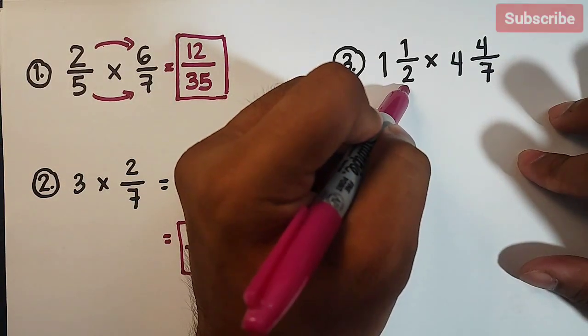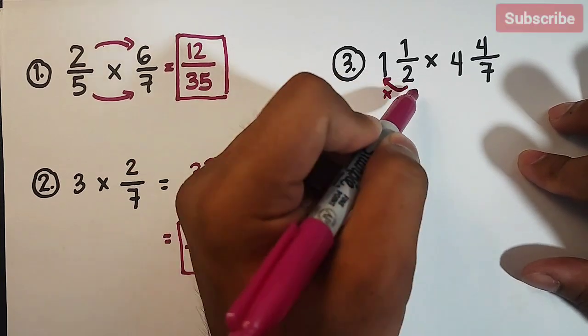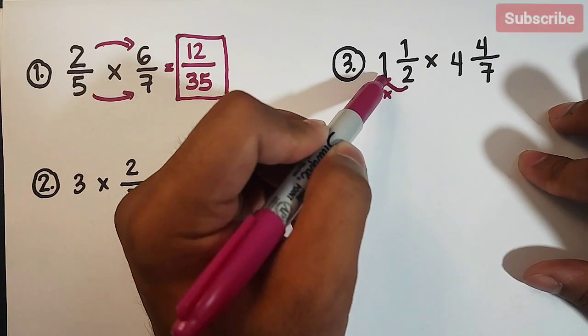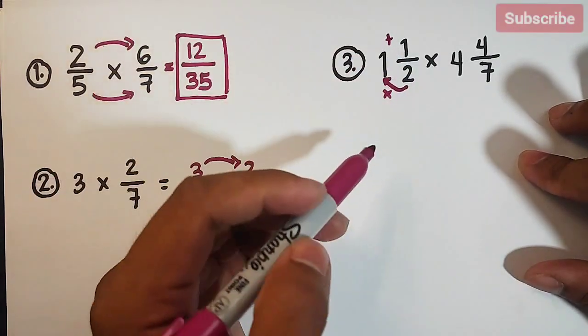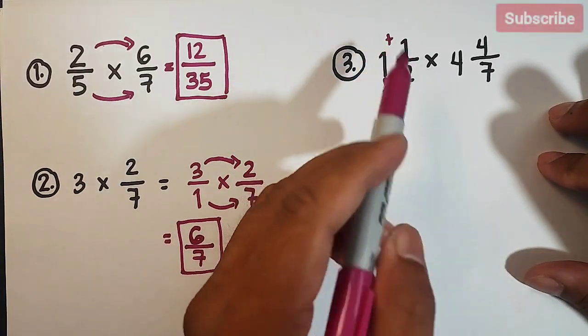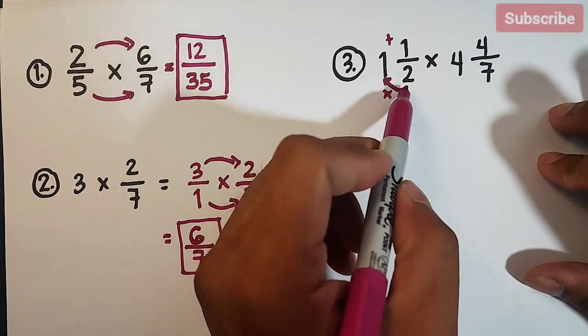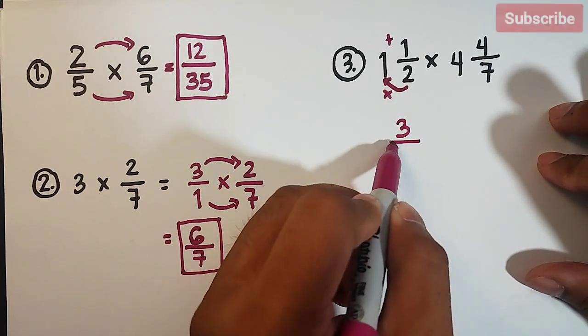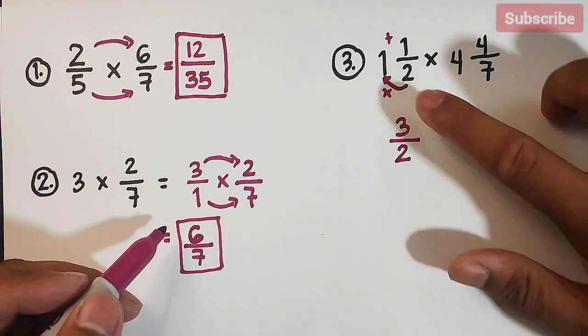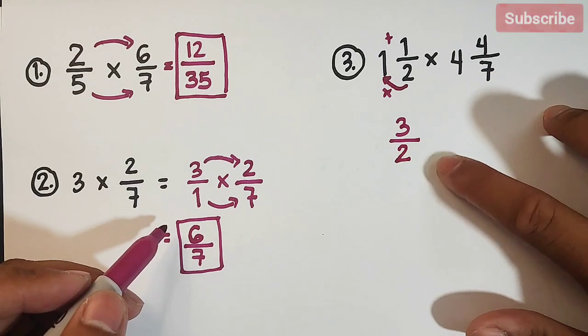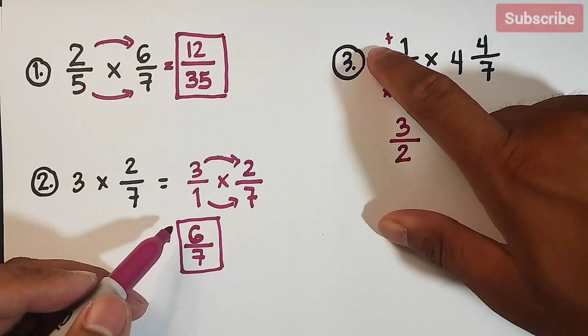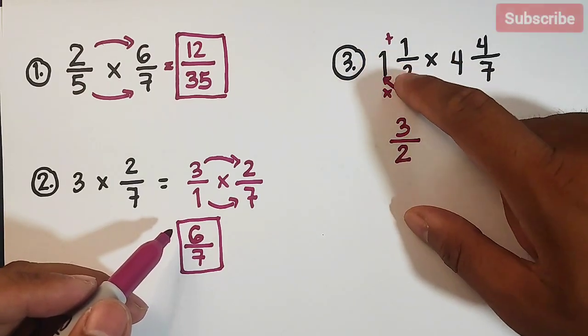Now, we will multiply first your denominator by the whole number, which is 1 times 2, or 2 times 1, that is equal to 2, then plus 1. Again, 2 times 1, that is equal to 2, plus 1, that is equal to 3. And copy your original denominator. Meaning, the equivalent improper fraction of 1 and 1 half is 3 over 2. Again, let's have a recap. 2 times 1, that is equal to 2, plus 1, that is 3. Then copy your denominator, which is 2.